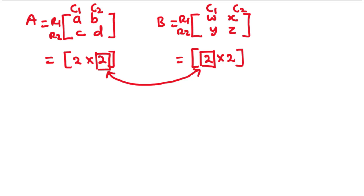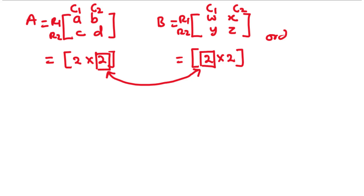How do we determine the order of the resultant matrix? The order of the resultant matrix is determined by the number of rows of the first matrix and the number of columns of the second matrix. So the order of the resultant matrix is 2×2. When you multiply a 2×2 matrix with another 2×2 matrix, the order of the resultant matrix will be 2×2.